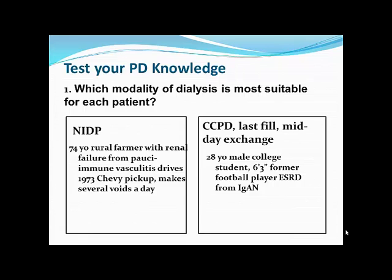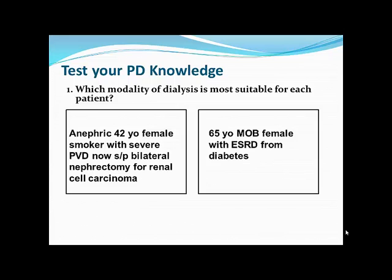A 42-year-old woman with no kidneys due to renal cell carcinoma, a smoker with severe peripheral vascular disease. She is likely not a good candidate for hemodialysis given poor vascular access options. As a younger patient she could probably do peritoneal dialysis, but with no residual renal function, an intermittent modality alone would be insufficient — she needs a continuous modality or supplementary exchanges.